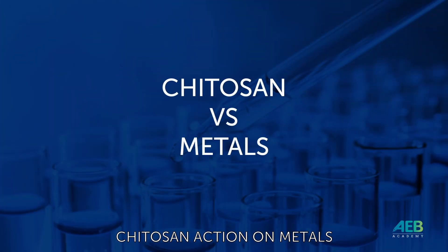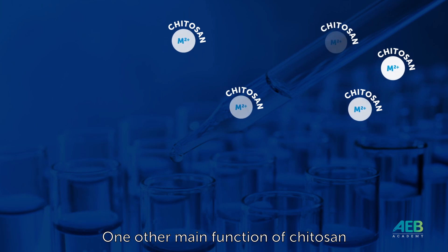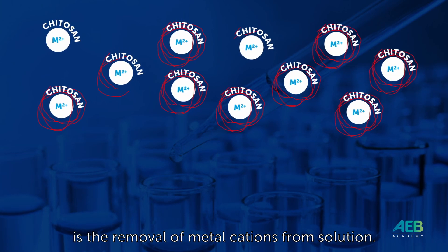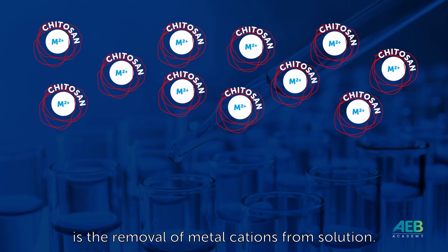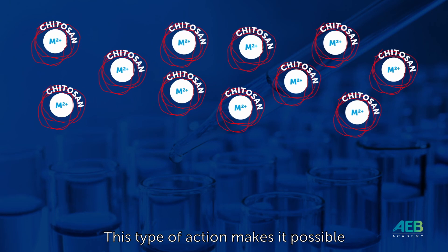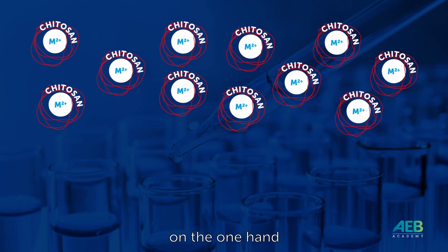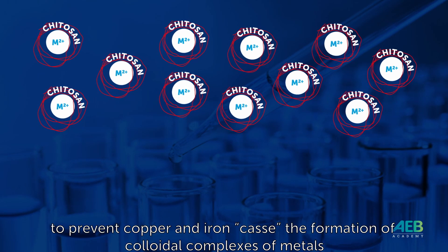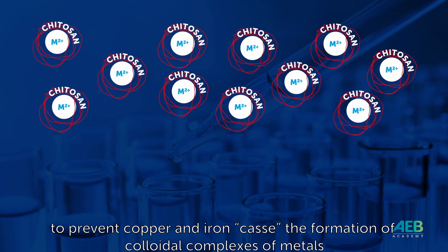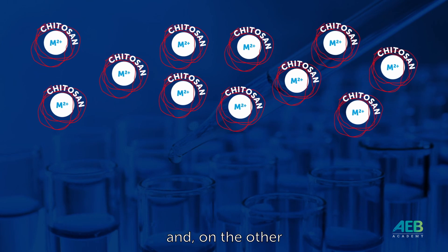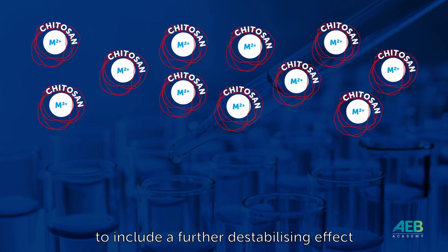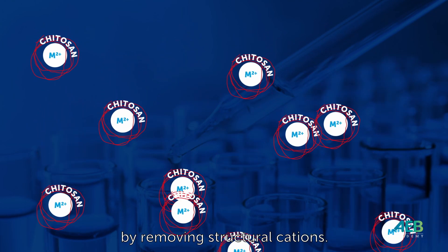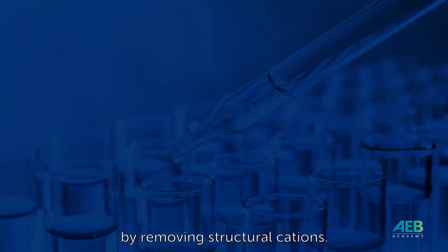Another main function of chitosan is the removal of metal cations from solution. This type of action makes it possible to prevent copper and iron CAS — the formation of colloidal complexes of metals — and also produces a further destabilizing effect on the microbial wall by removing structural cations.